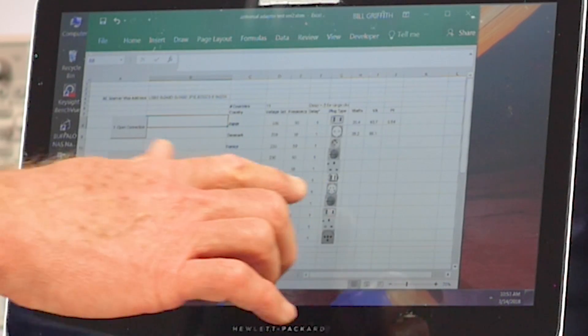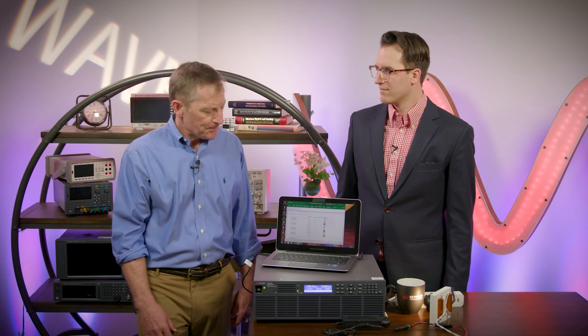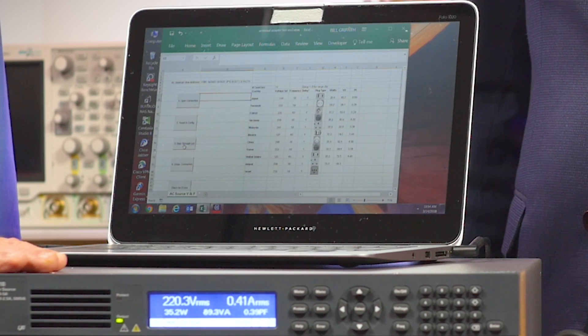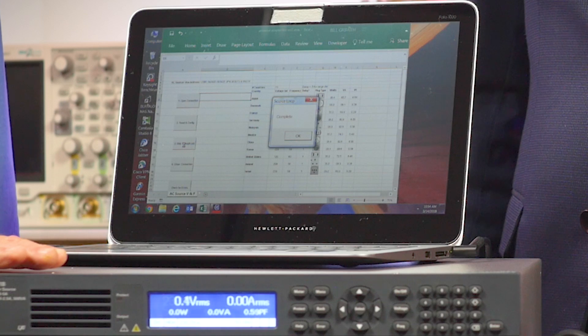So it's making measurements now, and you can see the tables getting populated as it goes down through each of the voltages and frequencies. One of the cool things about this, this is a dual range source, and to speed this test up, we're using only the highest range, which gives us all the voltages, and had we need higher current at less than 135 volts, we could have used the lower range, but it really wasn't necessary for this test.